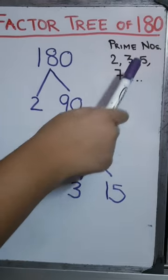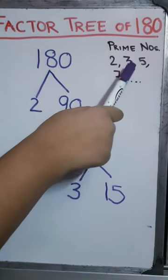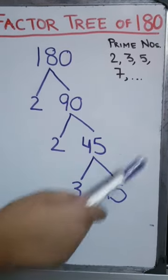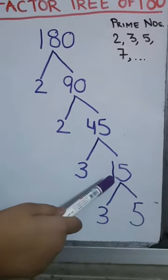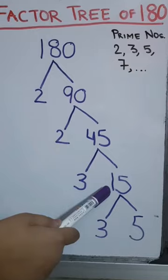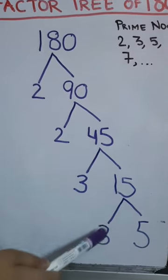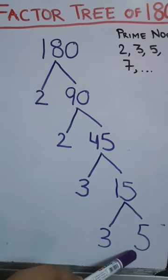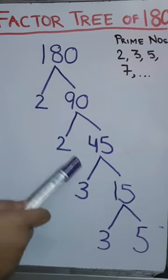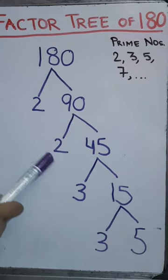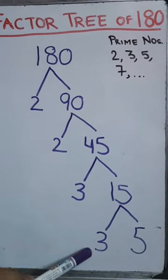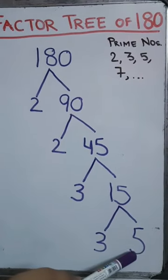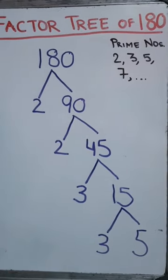Again, 3 is the smallest prime number that divides 15, and 15 divided by 3 is 5. Since all the nodes have prime numbers, this is the final factor tree of 180.